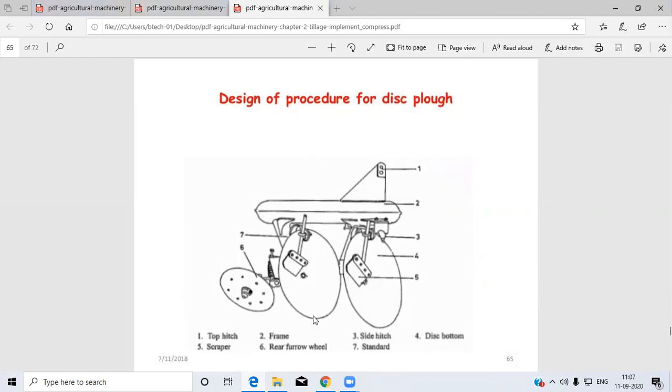This is the disc plough. Let us see its different components. Here are the discs. First is the top hitch, next is the frame, third is the side hitch, fourth is the disc bottom, fifth is the scraper, sixth is the rear furrow wheel, and seventh is the standard.